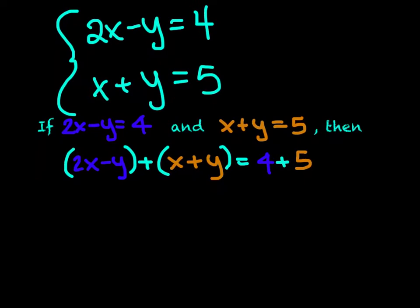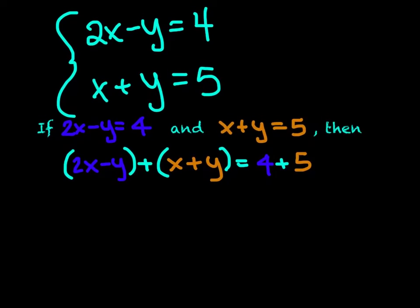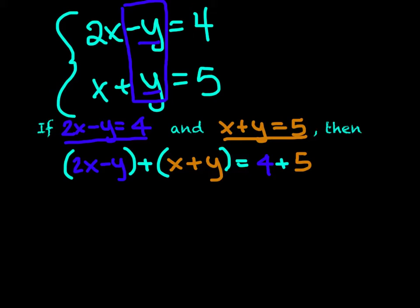We have this situation where we have 2x minus y is equal to 4 and x plus y is equal to 5. We can essentially say, let's put these two equations together. The reason why we can do that is we are looking to eliminate one of these variables. I have a negative y and a positive y, so if I were to add the equations together, those y variables will turn to 0. Negative y plus a positive y equals 0y, so all I would be left with is x's. I can solve for x, and then put that information back into one of the two equations and figure out what y is.